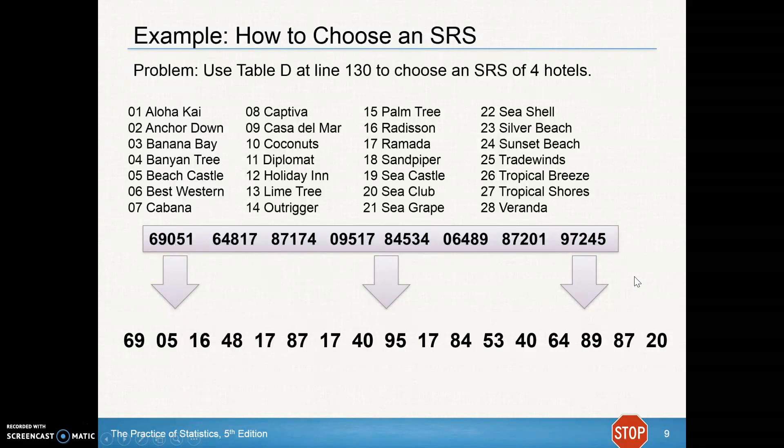And then I want to choose four hotels, but my answer is only between 01 and 28. So as I go through, I'm not going to use the 69 because it's not in here. 05 certainly is. That's Beach Castle. 16 certainly is. That's the Radisson. 48's not in that group. 17 is the Ramada.